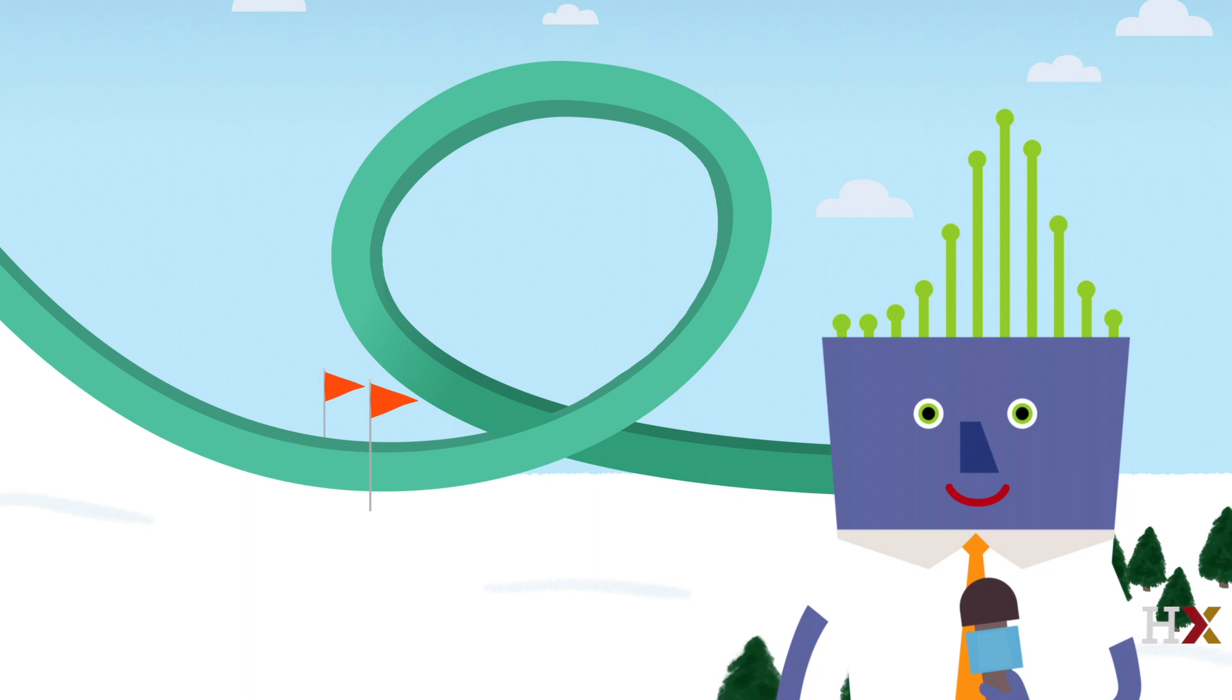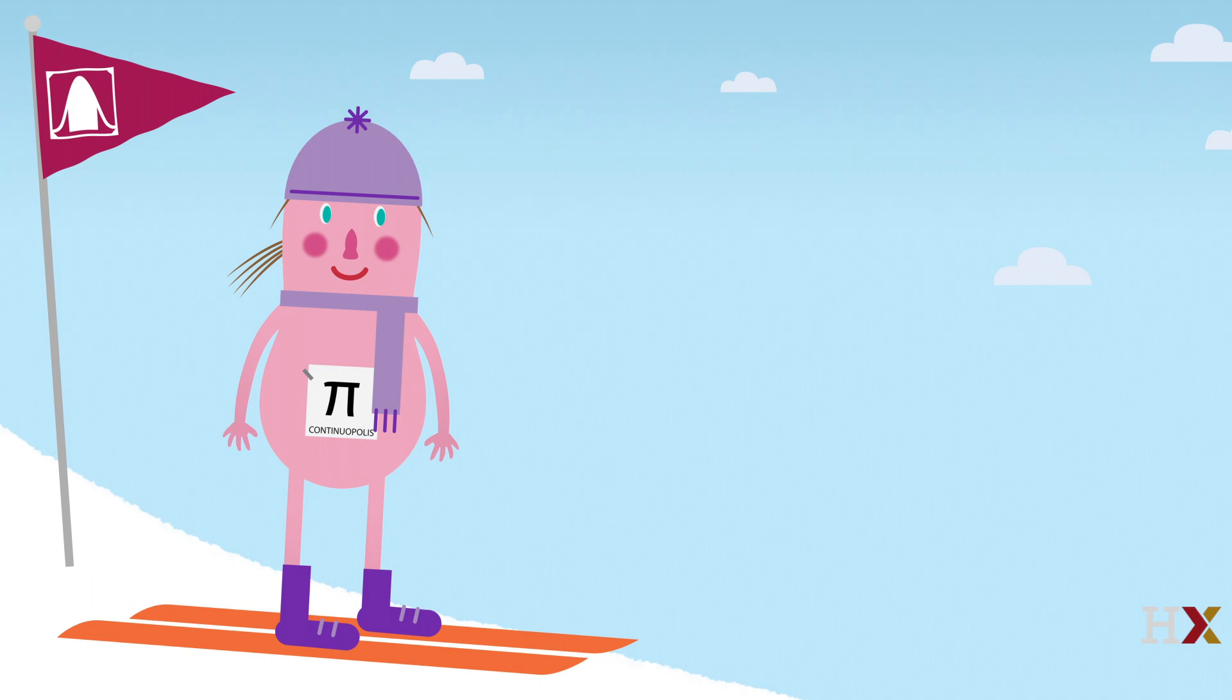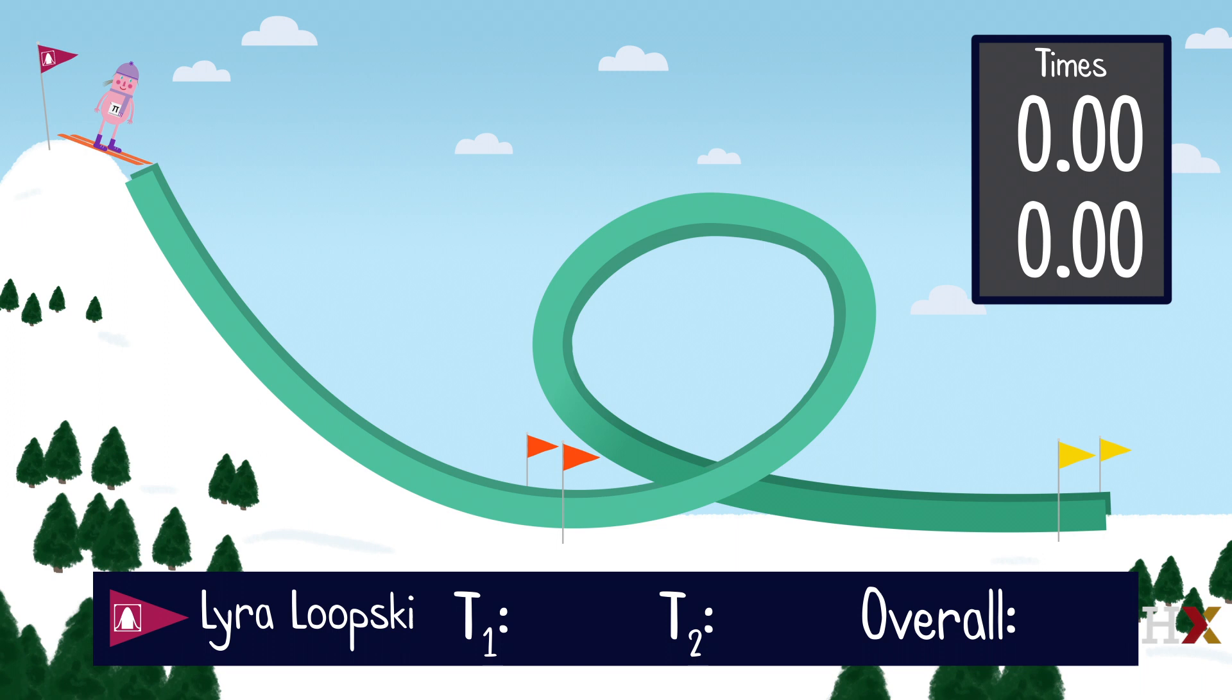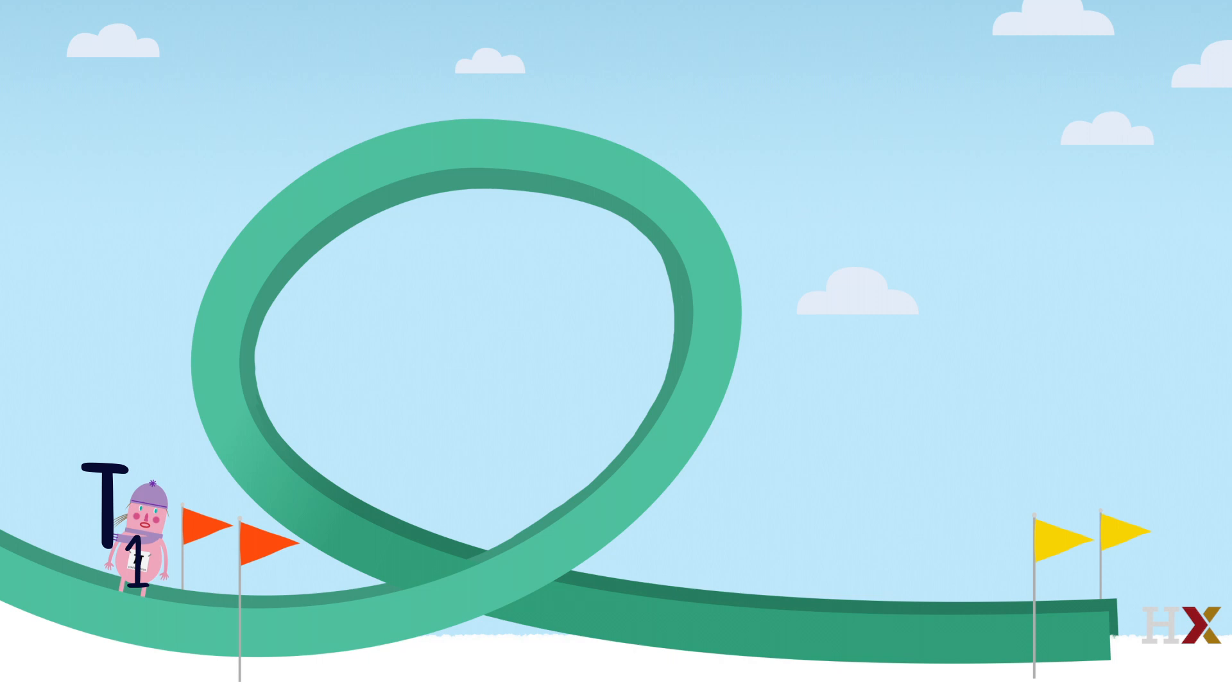And now for my personal favorite event in the Statland Games, the Ski Loop. Lyra Loopski from Continuopolis, one of the greatest ski loopers of all time, is getting ready to begin. Here she goes! It's always amazing to watch Lyra Loopski's Ski Loop. In Ski Looping, the competitor skis down a mountain and then 360 degrees through a loop, and then straight through to the finish line. Let T1 be the time it takes to reach the loop, and T2 be the additional time needed to reach the finish line. So the overall time is T equals T1 plus T2.